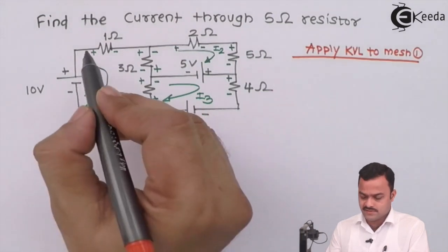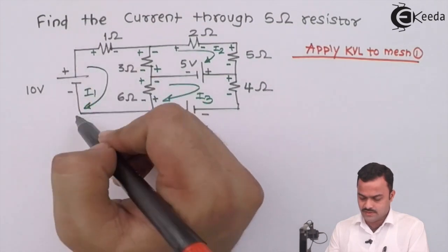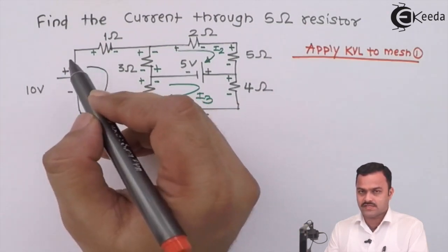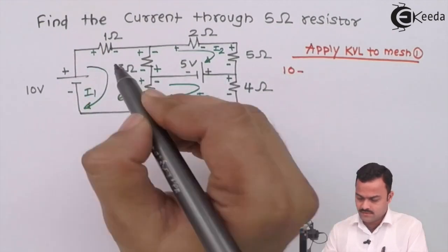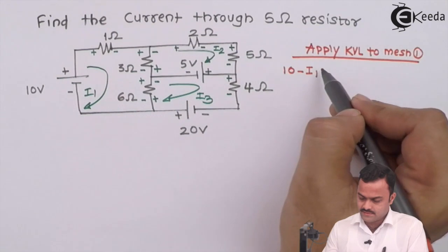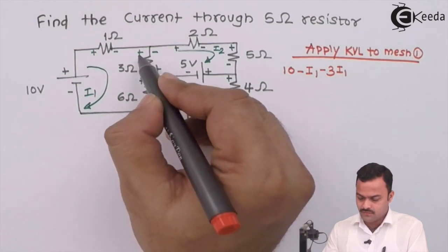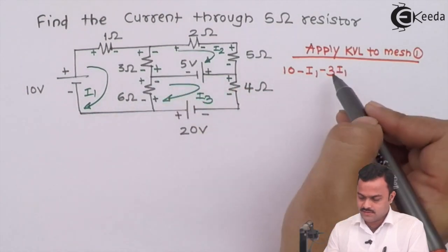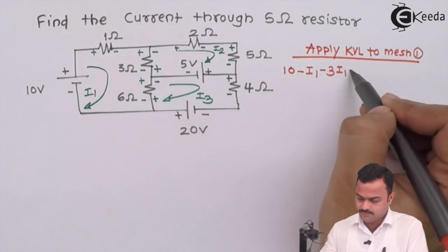Let's apply KVL to mesh one. You can start from any point; let's start from the voltage source. From here to here, minus plus convention means it is plus 10. Then plus minus across the 1 ohm resistor gives minus i1. Across the 3 ohm resistor, there are two drops: one due to i1 giving minus 3·i1, and one due to i2 in the opposite direction giving plus 3·i2.